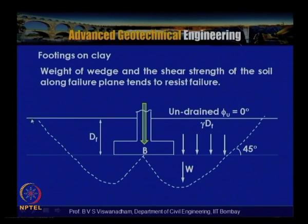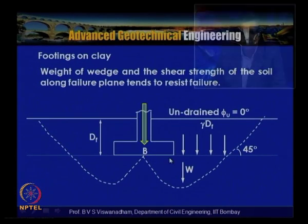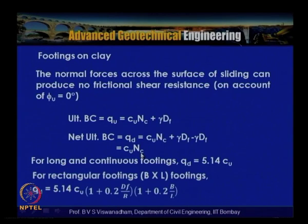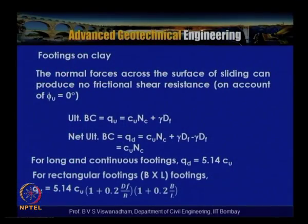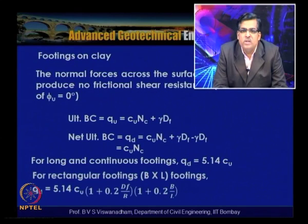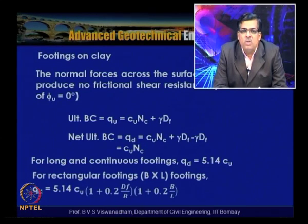For footings on clay, the normal force across the sliding surface produces no frictional shear resistance since phi_u equals 0. Ultimate bearing capacity is: q_u equals c_u N_c plus gamma d_f. Net ultimate bearing capacity: q_d equals c_u N_c. For long continuous footings, q_d equals 5.14 c_u, where N_c equals 5.14. For rectangular footings (Skempton 1951): q_d equals 5.14 c_u times (1 + 0.2 d_f/b) times (1 + 0.2 b/l).